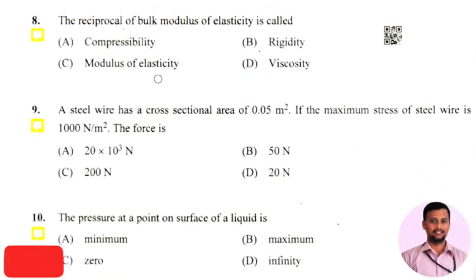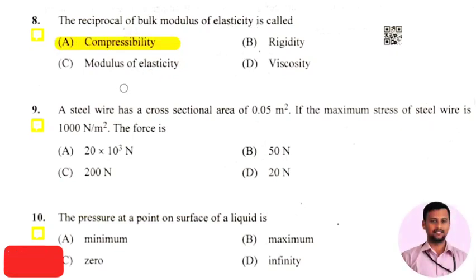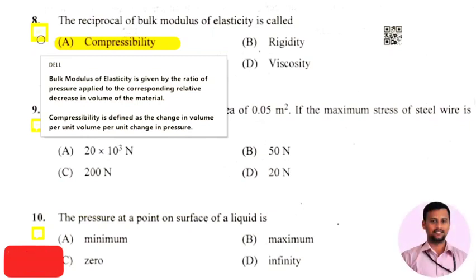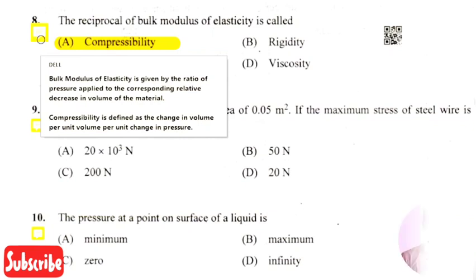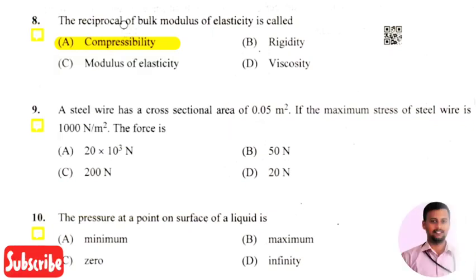The next question: the reciprocal of bulk modulus of elasticity is — the right answer is option 1, that is compressibility. The bulk modulus is the ratio of pressure applied to the corresponding relative decrease in volume of a material. The reciprocal of bulk modulus is compressibility.